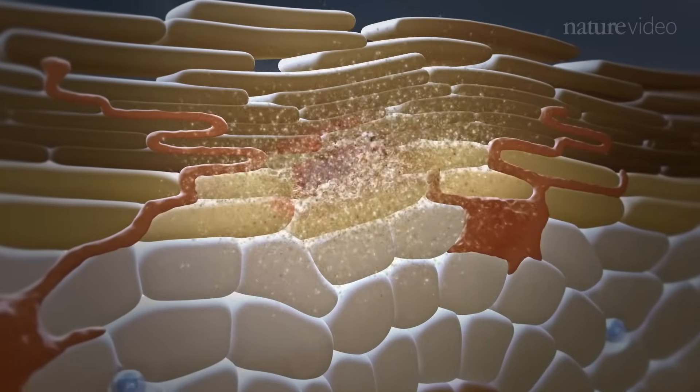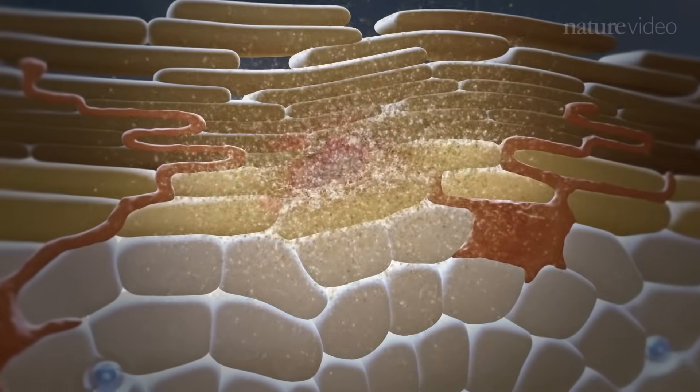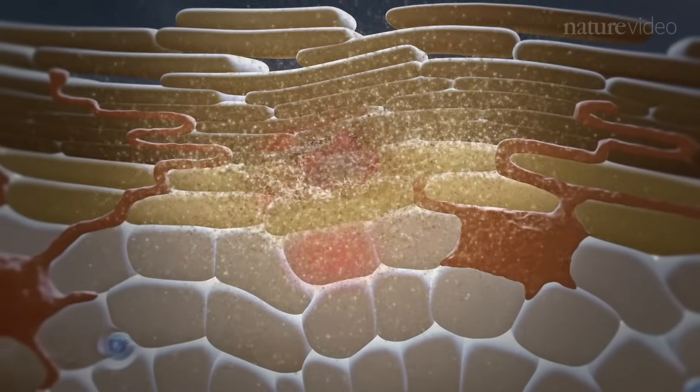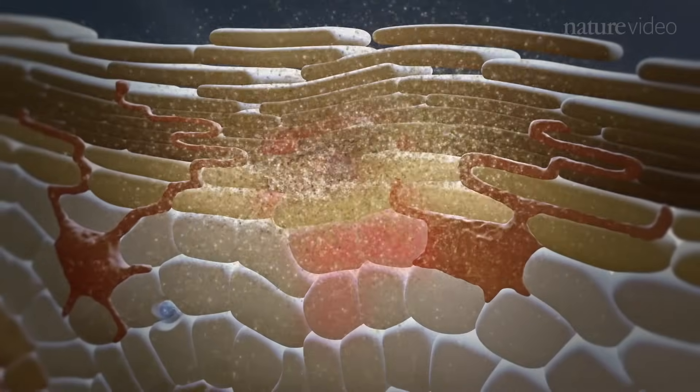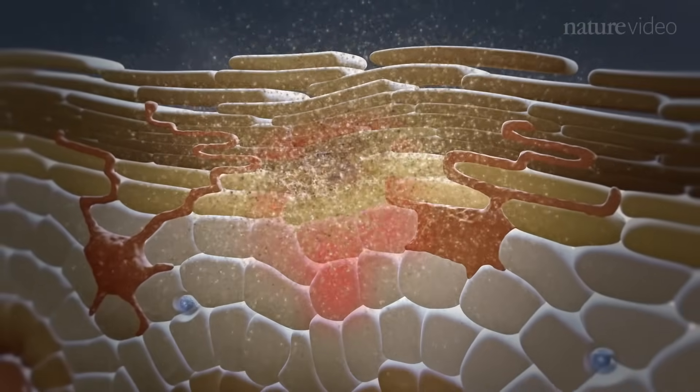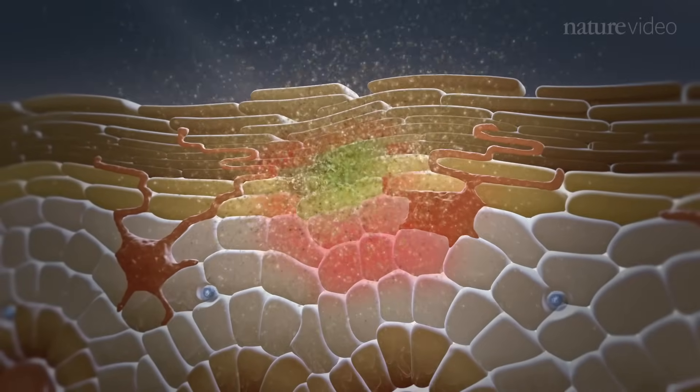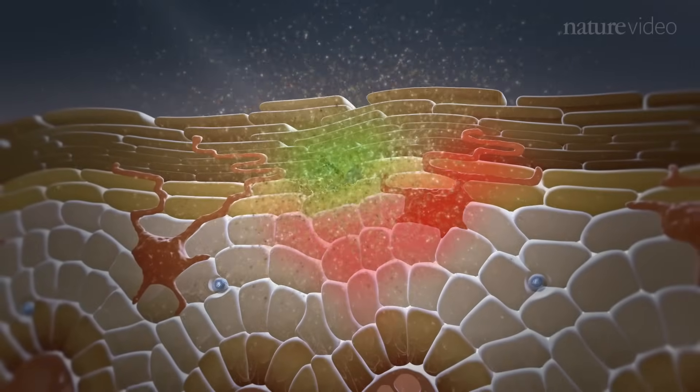Dendritic cells and keratinocytes sense tissue damage, such as wounds or cold sore lesions that occur when latent herpes virus reactivates, through evolutionarily conserved receptors that recognize pathogen-derived molecular patterns or host-derived molecules that are exposed by cell death, such as DNA.